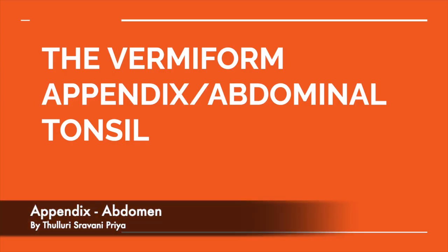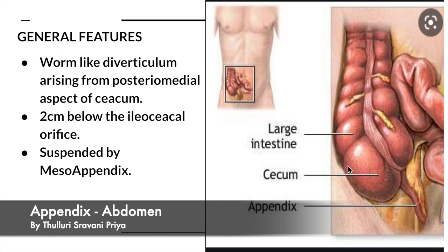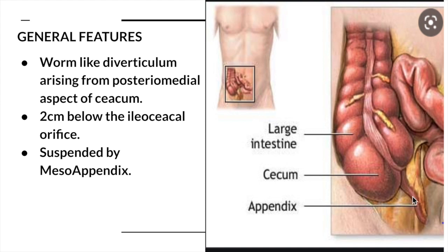Now we'll see the next topic: vermiform appendix, also called the abdominal tonsil. We'll see the external features of the appendix. It is a worm-like diverticulum. It is called worm-like because a peritoneal fold attached to one end of the appendix is shorter than the length of the appendix, so it produces some kinks on its body, giving it the appearance of a worm. That's why we call it the vermiform appendix.